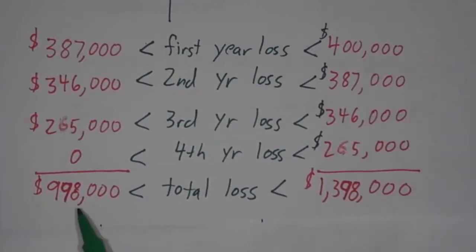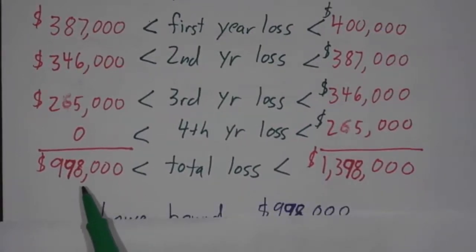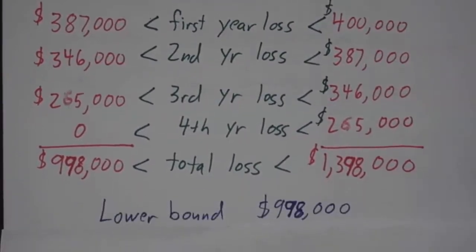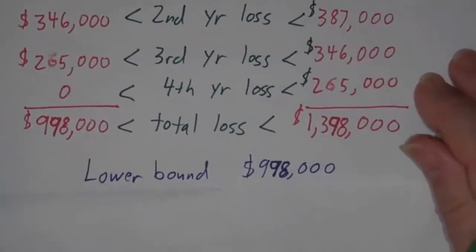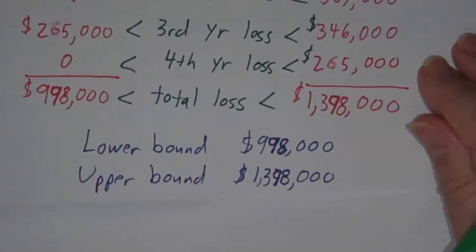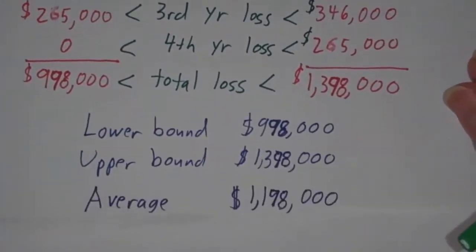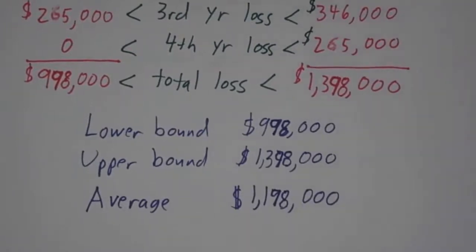Now, this is a lower bound. We know that it lost at least this much money. This is an upper bound. We know it lost at most that much money. And if you want to make a pretty good estimate, you take the average of the two. The average of the upper and the lower bound is a pretty good guess, and in this case, it's just under $1,200,000.